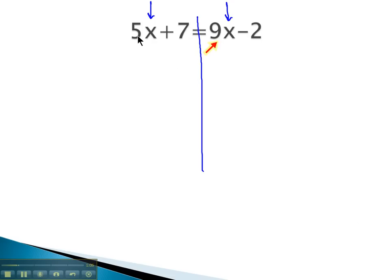Because 5 is smaller than 9, we would say the 5x is the smaller one. It is right now a positive 5x, and we can move that whole term as a group with a negative 5x on both sides.